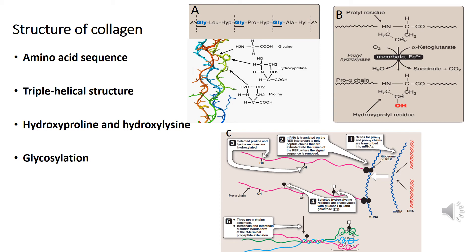Looking at the amino acid sequence of collagen, we see that it is rich in proline and glycine amino acids, both of which are important in the formation of the triple-stranded helix. Proline facilitates the formation of the helical conformation of each alpha chain because its ring structure causes kinks in the peptide chain. Glycine, the smallest amino acid, is found in every third position of the polypeptide chain and fits into the restricted spaces where the three chains of the helix come together. The glycine residues are part of a repeating sequence Glycine-X-Y, where X is frequently proline and Y is often hydroxyproline but can be hydroxylysine as well.